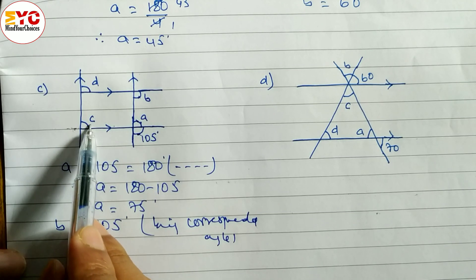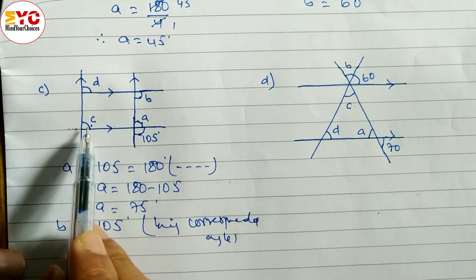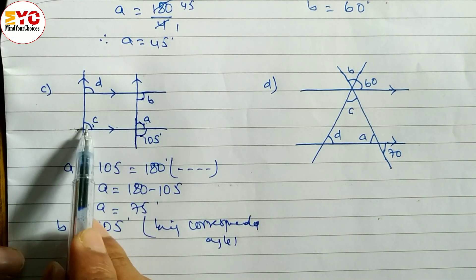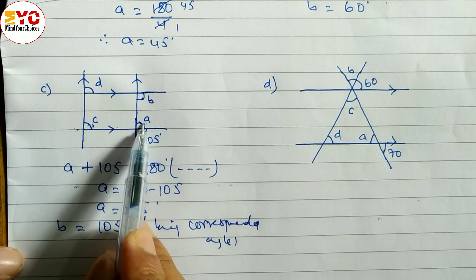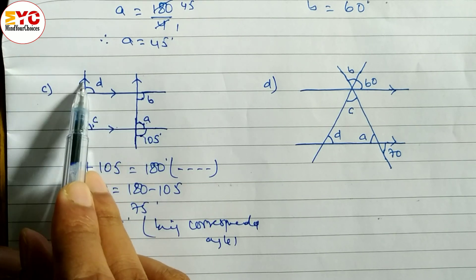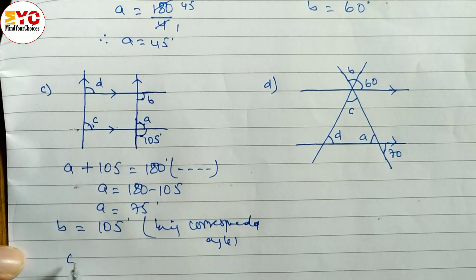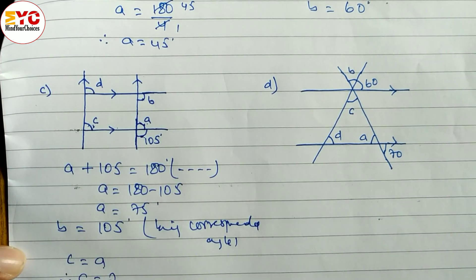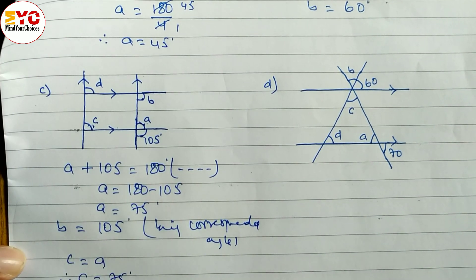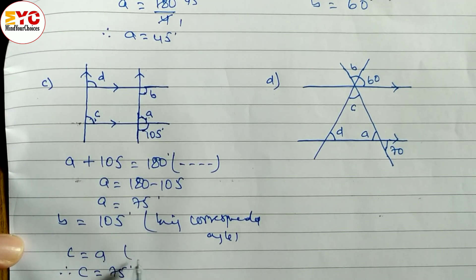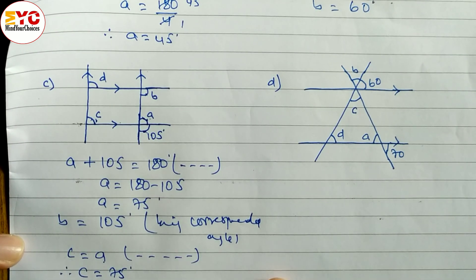After that, to find out c: c is equal to a. We can write c is equal to a — one is inside, one is outside of these two parallel lines, parallel lines already given. So we can write c is equal to a. Therefore c is equal to 75. Reason: being corresponding angle.